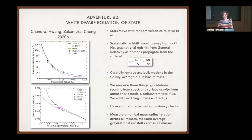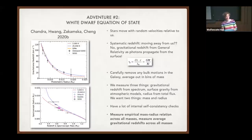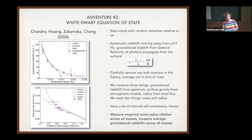Each bin contains roughly 500 objects or more, and the total number of objects that went into this analysis is about three thousand. You can see error bars at the extreme ends of the mass distribution where there are fewer objects. All kinds of checks confirm this is working very well.